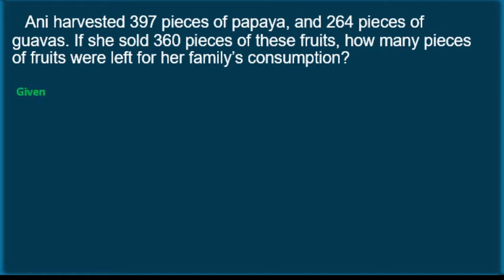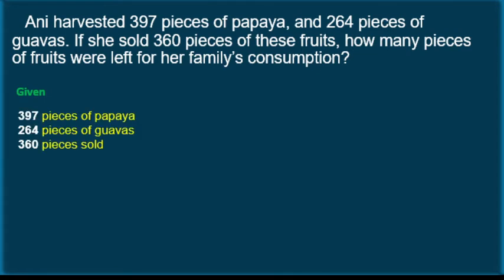The given in the problem: 397 pieces of papaya, 264 pieces of guavas, and 360 pieces of sold fruits. This given information can be used to make a number sentence.